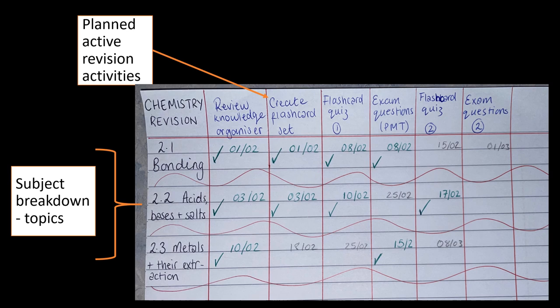Along the top I would fill this with my planned active revision activities. These could be different for different people, whatever revision that you've planned. That could be reviewing those knowledge organizers that you find on the WJEC website, it could be the blended learning activities also on that website, it could be creating a set of flashcards and then the subsequent flashcard quizzes that you do with that set, it could be exam questions from the physics and maths tutor website that you might want to revisit on more than one occasion. Fill that top row with all of those different activities that you plan to do for that subject.